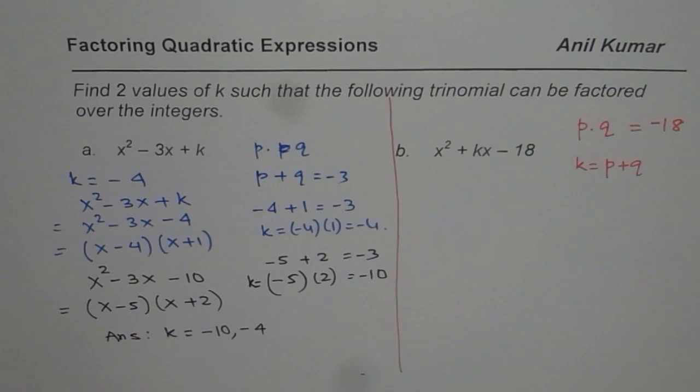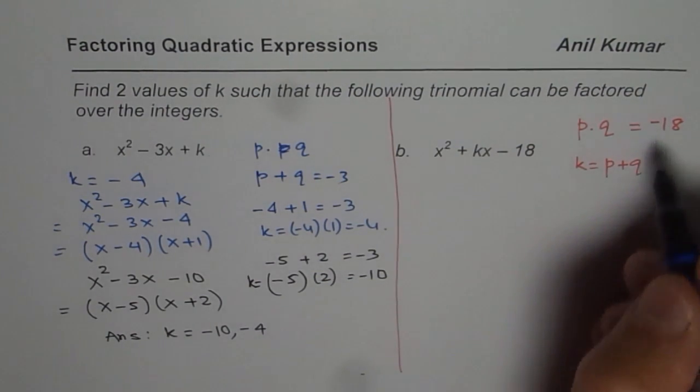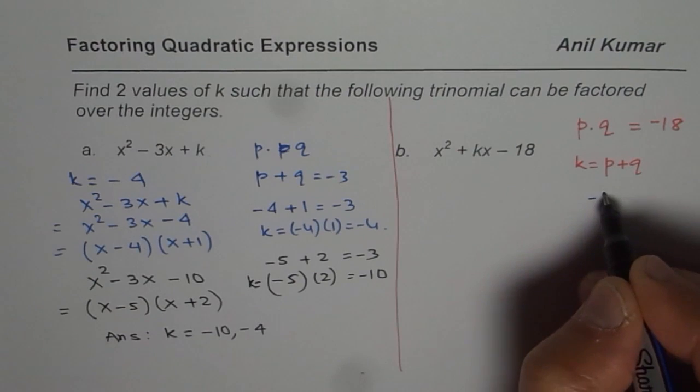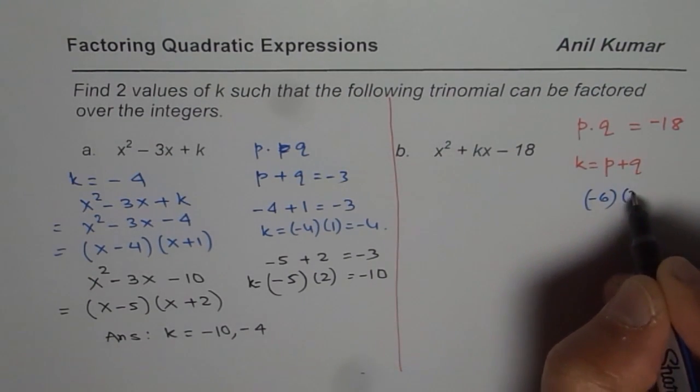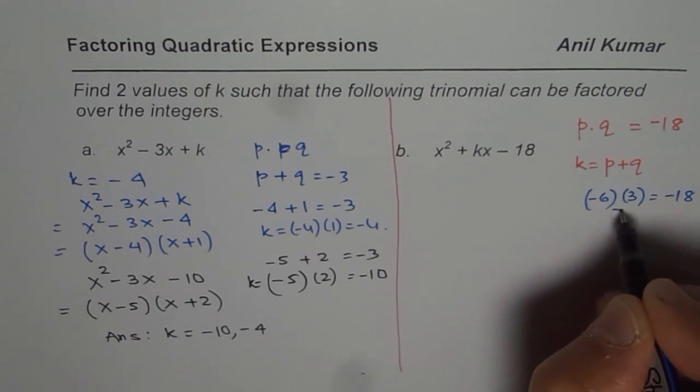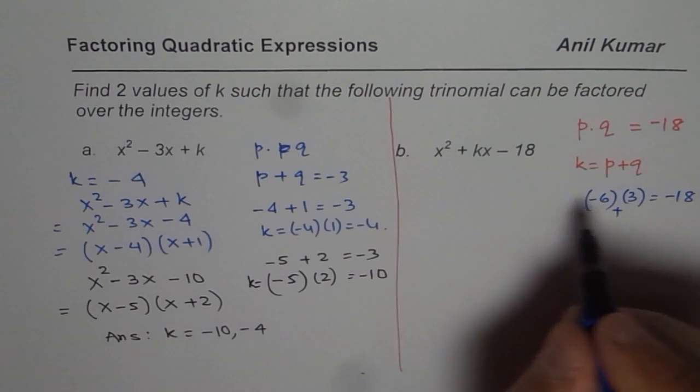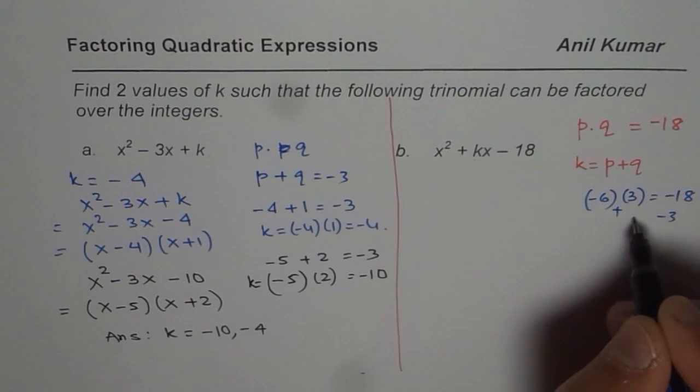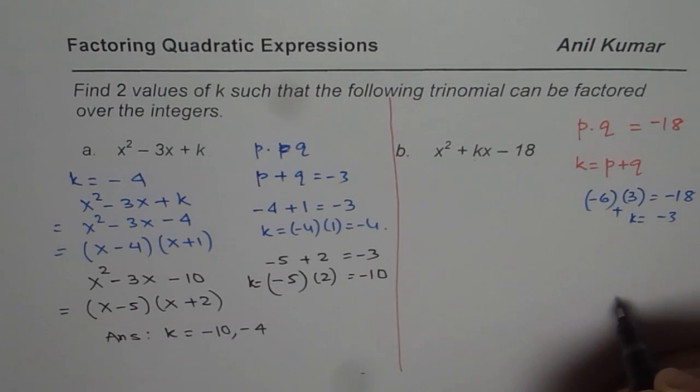What combinations can give you minus 18? This is what you have to look for. Minus 18 could be 6 times 3. So I could have minus 6 times 3, for example, is minus 18. And if I add them, what do I get? I get the value of k. If I add them, I get minus 3. So k equals minus 3 can work.